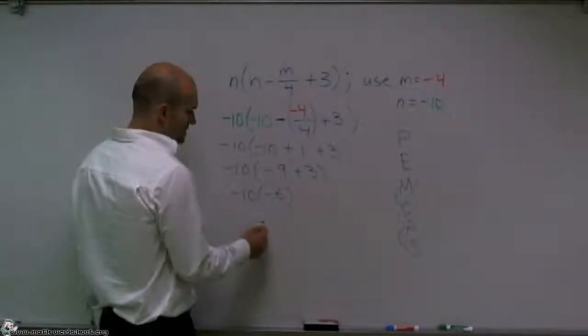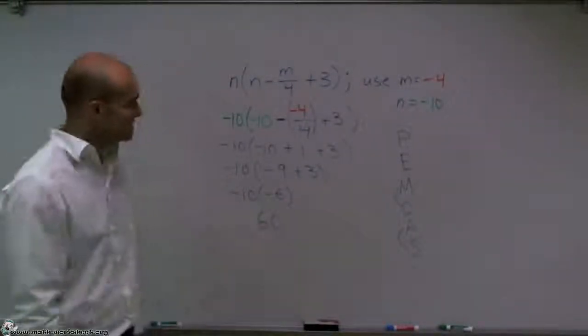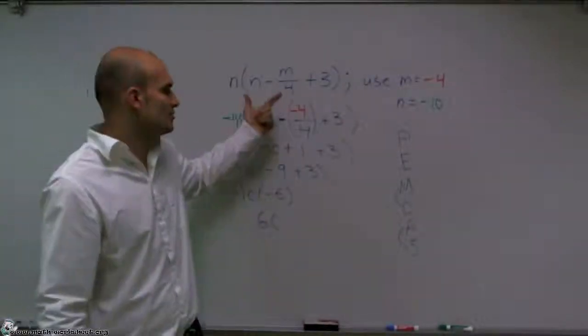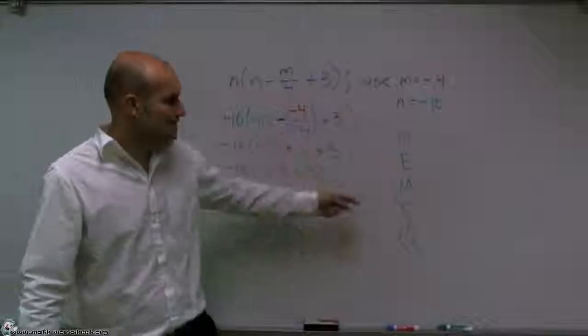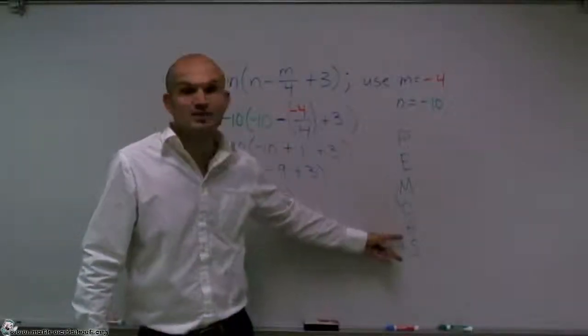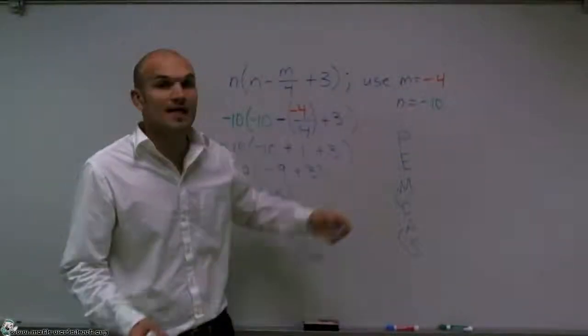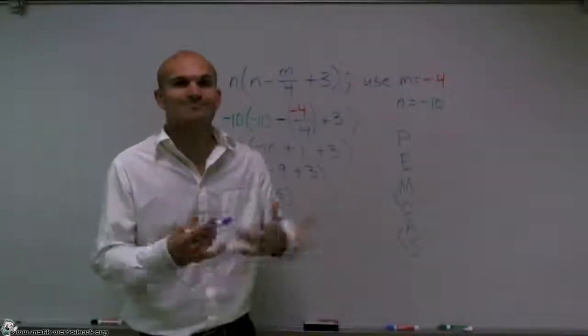The negatives cancel out, and that's going to give me a positive 60. So when evaluating this expression, just make sure you follow the rules. Always go from left to right when you're doing multiplication and division and addition and subtraction, but then also make sure we always look inside the parentheses first and then look for the exponents or the powers. Thanks.